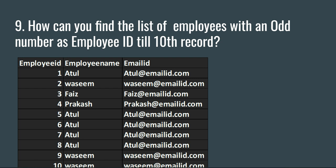The condition is that the record should be till the 10th row. So you have millions of rows in your table and you have to get only those employees which have an odd number in their employee ID till the 10th row. You have your table with employee ID, employee name, and employee email ID. As per the question, the first odd employee ID is 3, then 5, then 9.